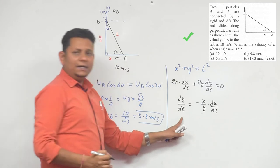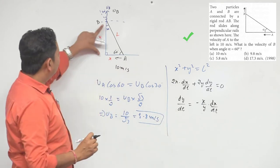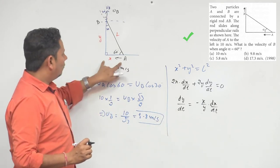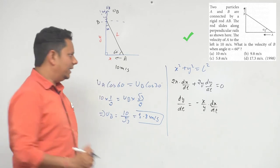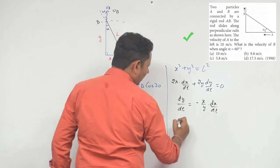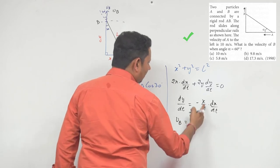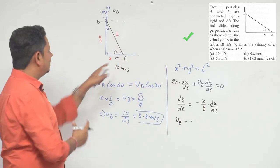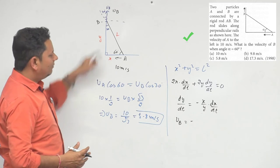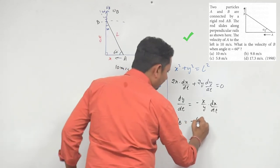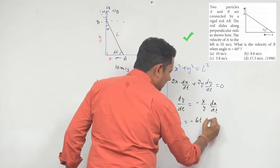Now, dy/dt, we know that y is going to change, that is VB. So if we put the value, then VB equals minus x/y. If this is 60 degree angle, then x/y equals cot 60. Cot 60 degrees. All right?